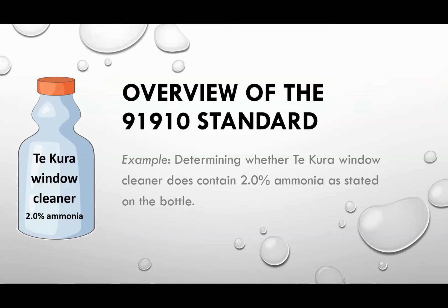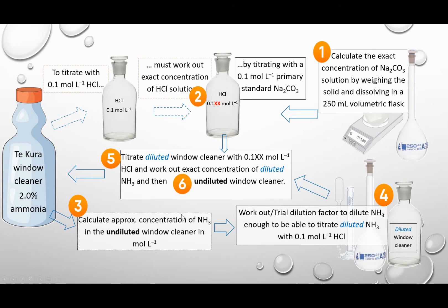Kia ora. Let's look at an example of what you could be doing in this 91910 standard. For example, you are given a window cleaner and you're told it contains 2.0% ammonia. And you have to find out, is that true? So we follow these steps. It looks rather complicated, but let's look at each step.